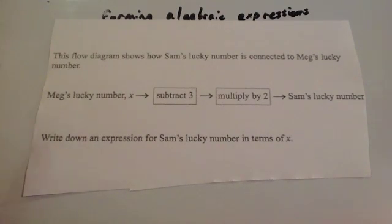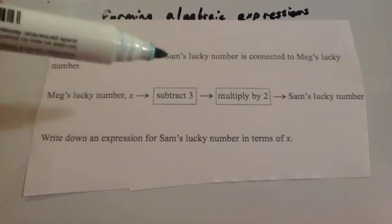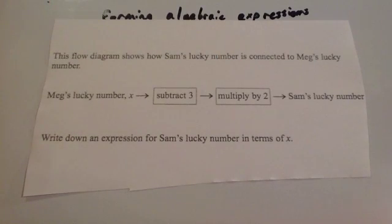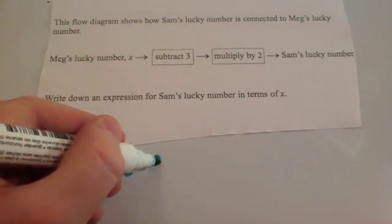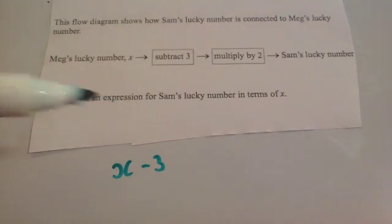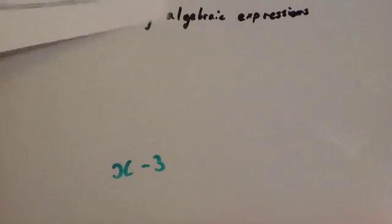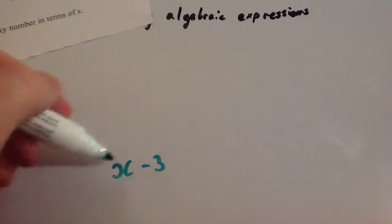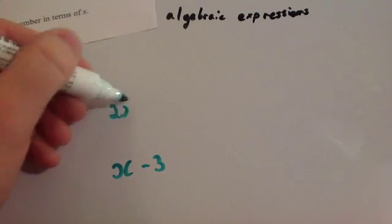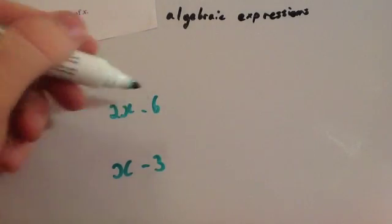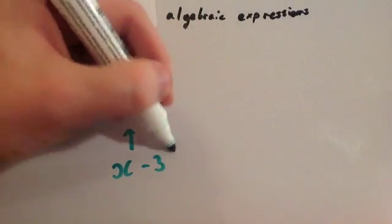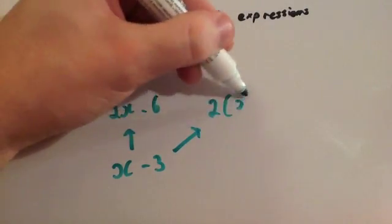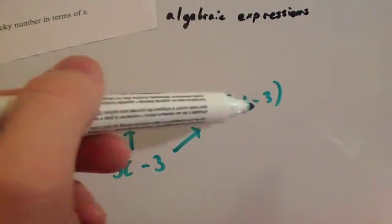In the last question, a flow diagram shows how Sam's lucky number is connected to Meg's lucky number. Meg's lucky number is x. To get Sam's lucky number, you subtract 3 and then multiply by 2. Starting with x, subtracting 3 gives x minus 3. Now multiplying by 2: you can either expand it — 2 times x is 2x, and 2 times minus 3 is minus 6, giving 2x minus 6 — or you can write it in brackets as 2(x minus 3). Both forms represent the same thing.